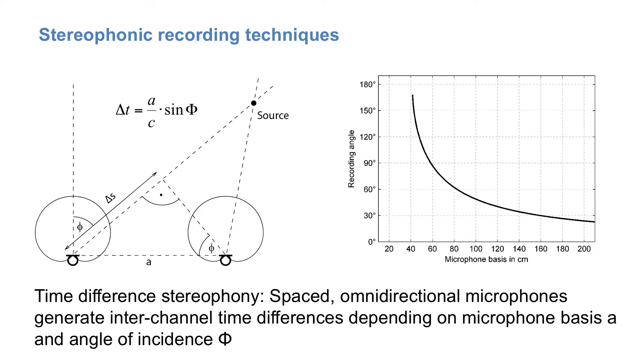Let's have a look at systems which produce only interchannel time differences and no level differences. These can be realized with a pair of spaced omnidirectional microphones. The interchannel time difference and thus the recording angle then depends on the microphone spacing and the angle of sound incidence according to a simple triangular expression.